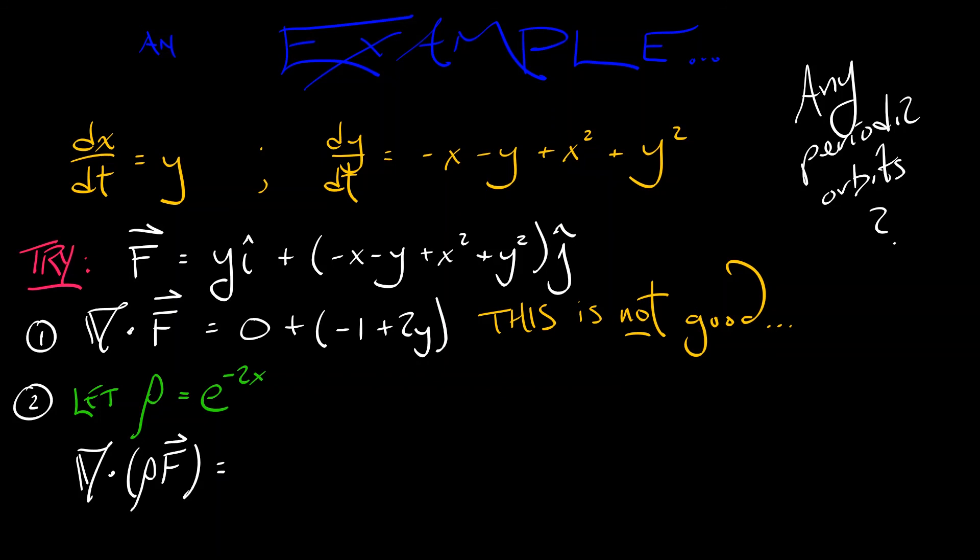then the partial of the i term with respect to x is now y times the derivative of e to the minus 2x. That's e to the minus 2x times negative 2. OK. The partial of the second term with respect to y is e to the minus 2x times quantity negative 1 plus 2y.